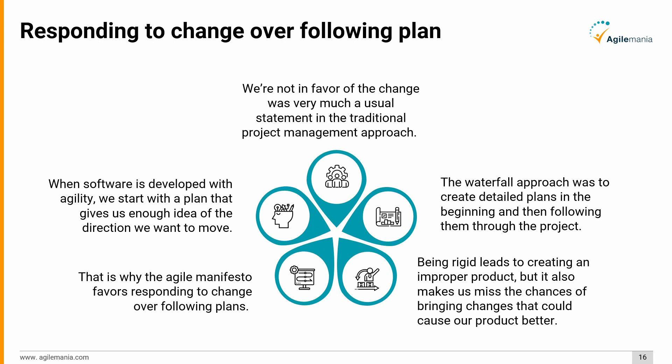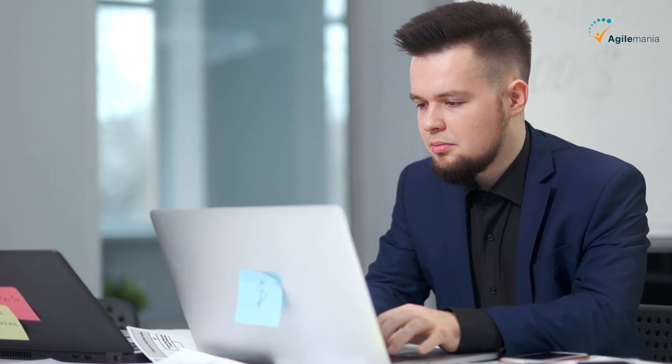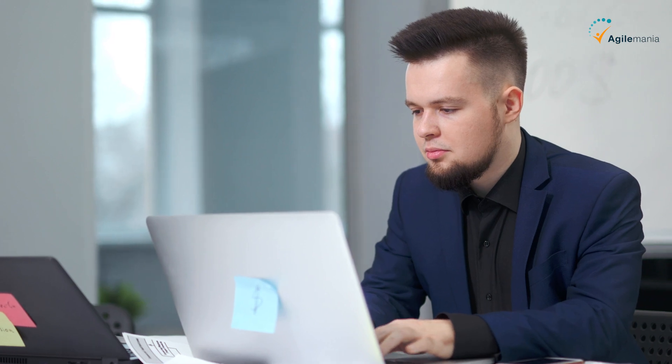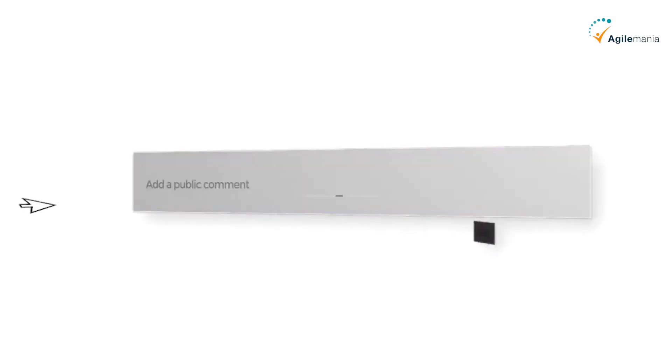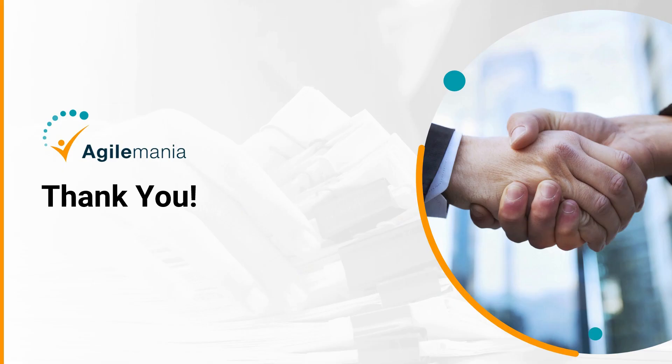When software is developed with agility, we start with a plan that gives us enough idea of the direction we want to move. These were the four values of the agile manifesto. Follow them in your project management to ensure its success. Put down your comments if this video was helpful to you.